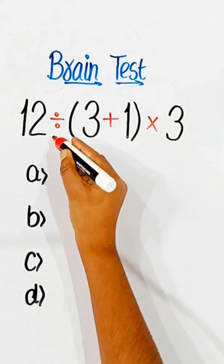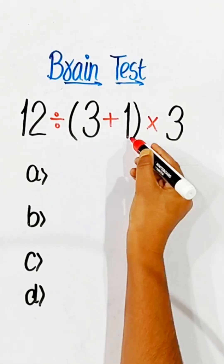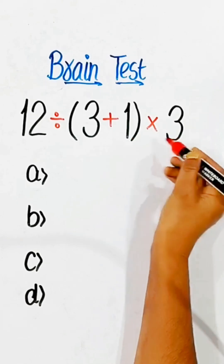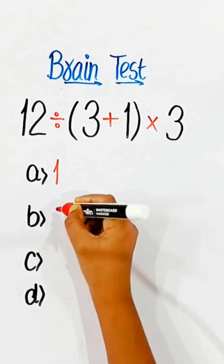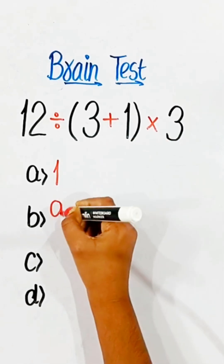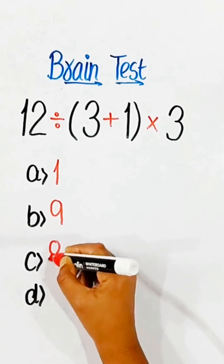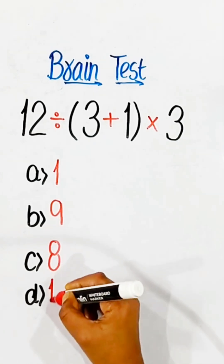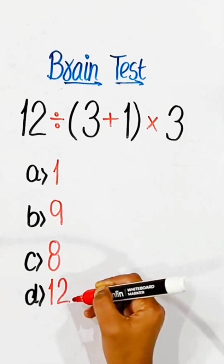12 divided by 3 plus 1 into 3 equals 1, 9, 8, or 12. Comment your answer.